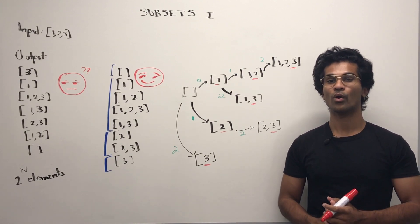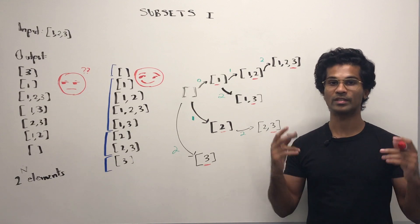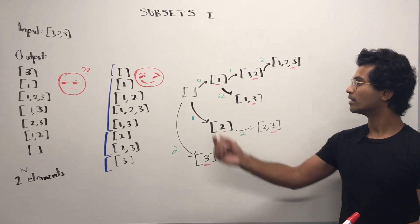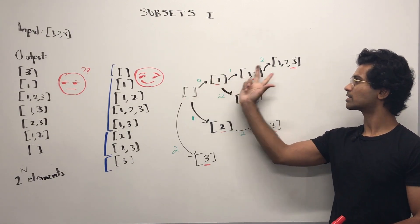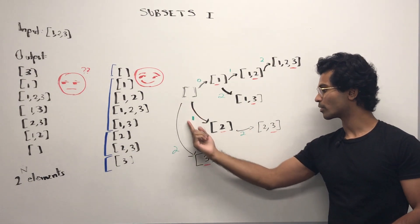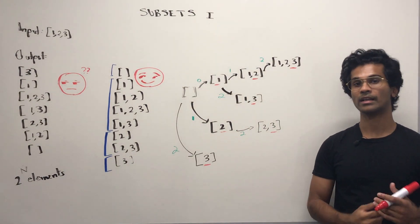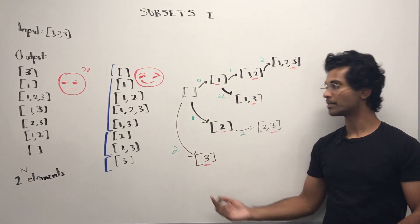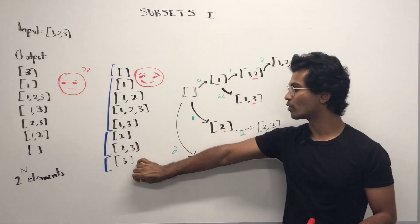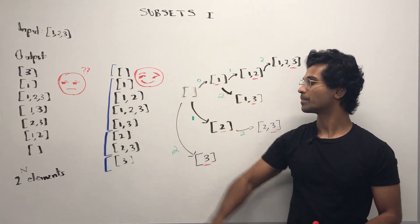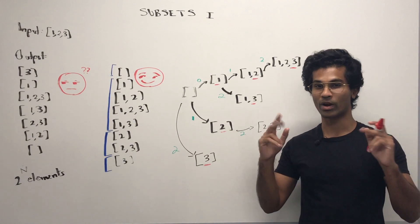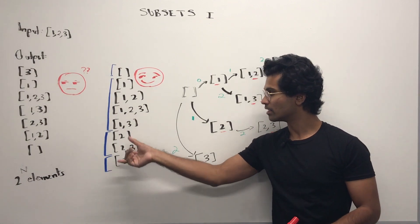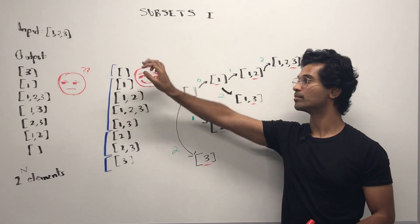At the same time, we're also going to keep track of these branches. So here's the branch that's connected to one. Here's the branch that's connected to two. And here's the branch that's connected to three. If you notice, I broke them up even in this output, according to the kind of branches. So the threes, the twos, the ones and the empty.